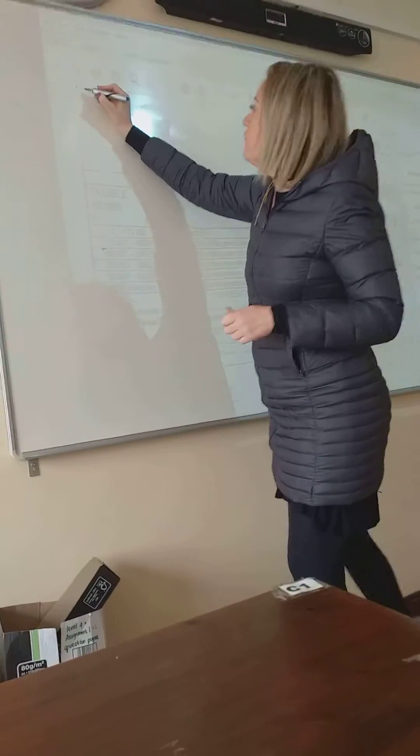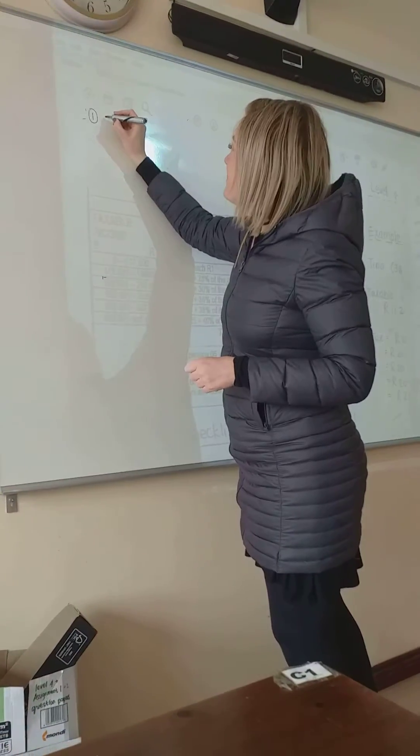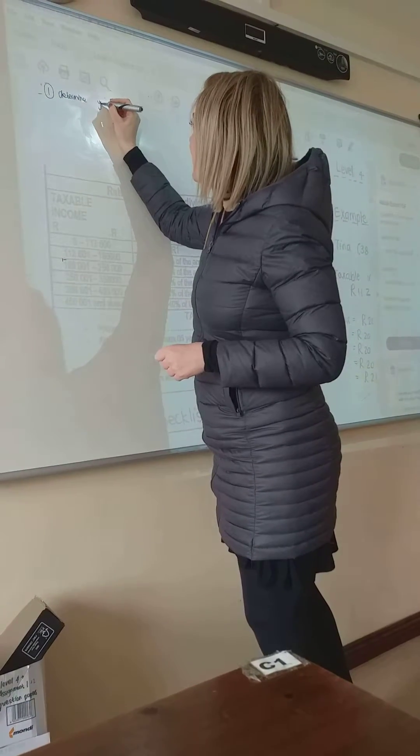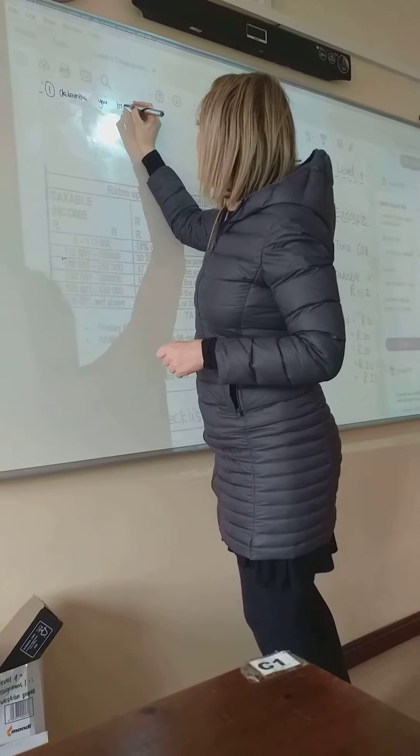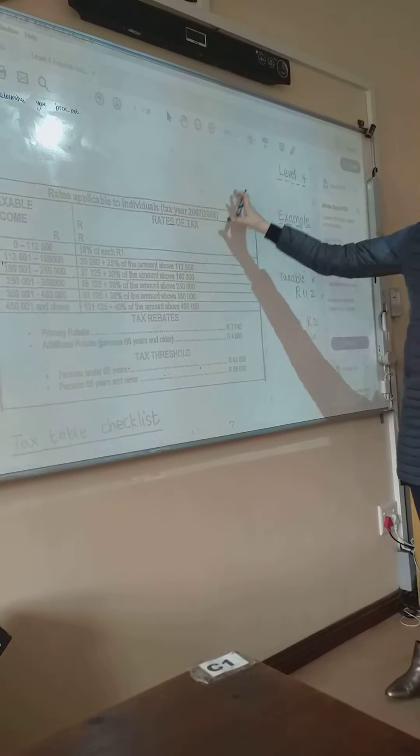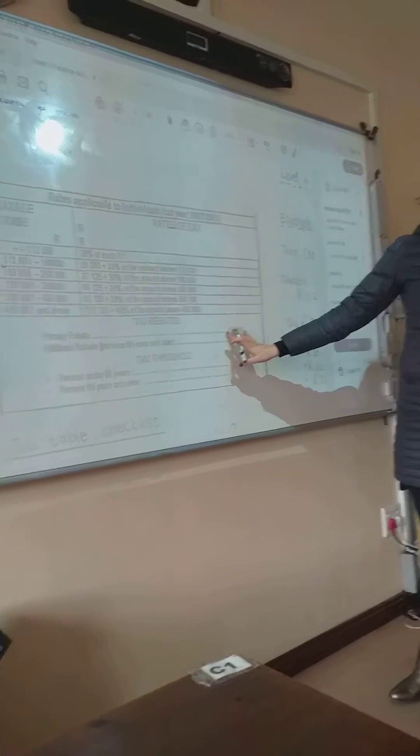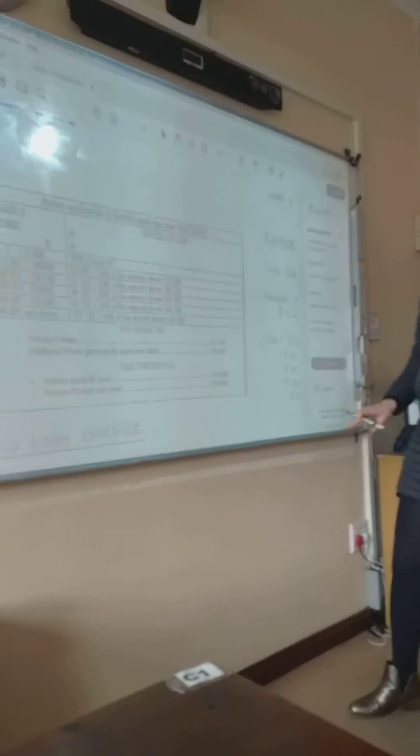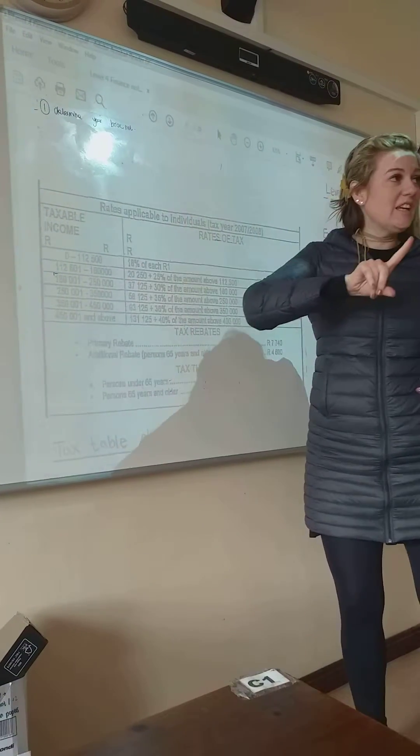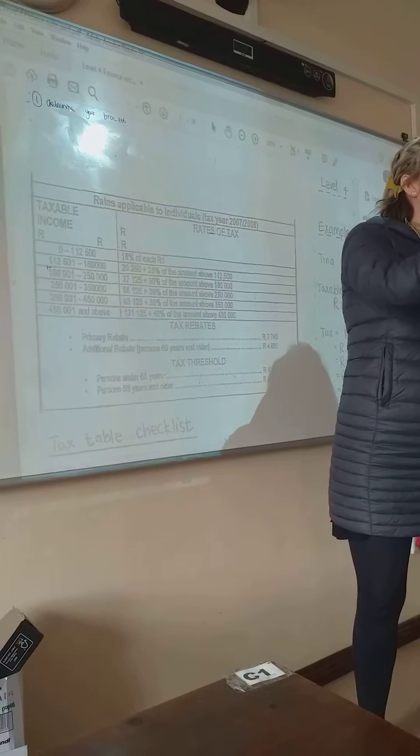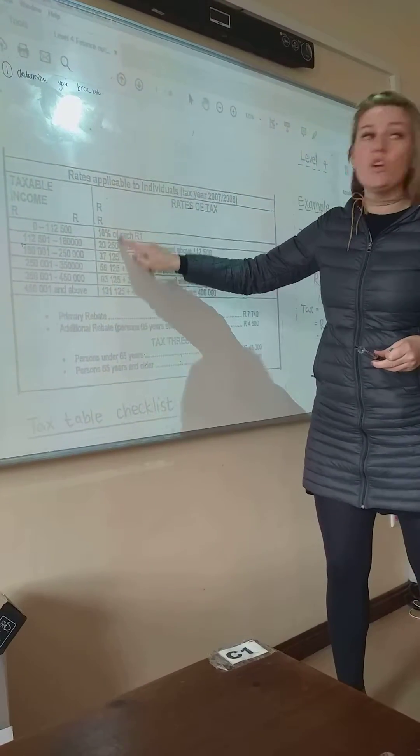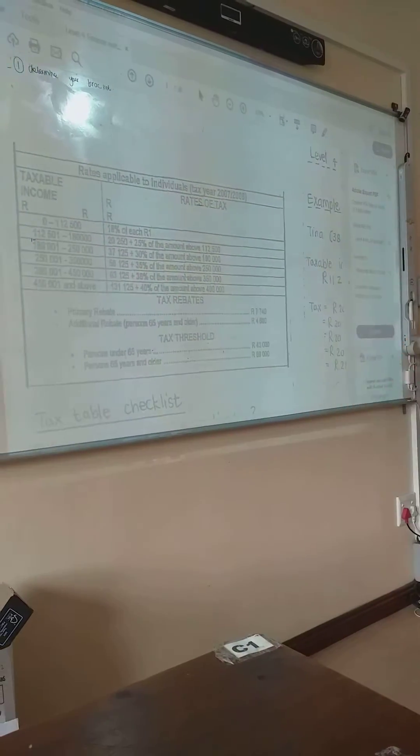So the first step you do for a rebate table is to determine your bracket. In other words, you'll see there's an example. This is, by the way, it comes out of your finance notes, but don't stress in looking for it, just look on the wall. So wherever your amount falls into your salary there annually, so if they give you a month's salary, you have to multiply it by 12, and then you choose your bracket.